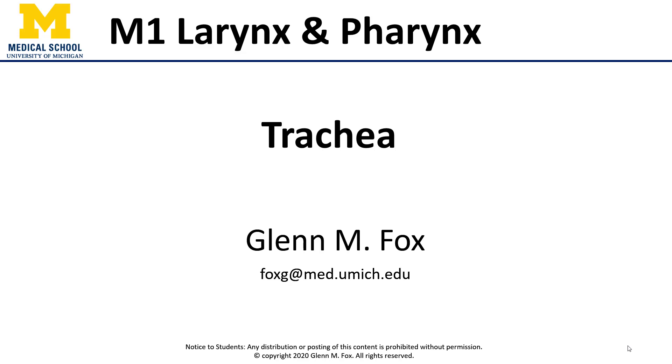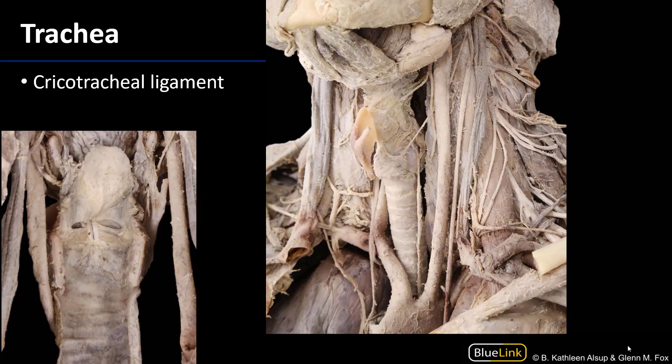Let's talk about the trachea. The trachea is a conductive pathway distal to the larynx and proximal to the primary or main stem bronchi. It's a part of the bronchial tree, which we'll discuss in the context of the lungs and the conductive pathway.